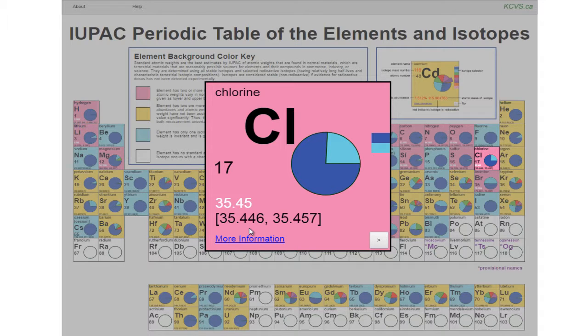In normal materials, chlorine's atomic weight values can be as low as 35.446 and as high as 35.457.